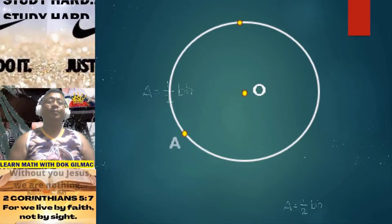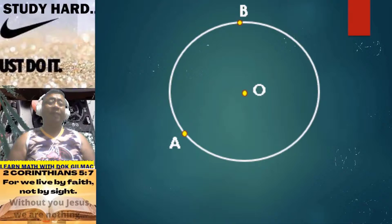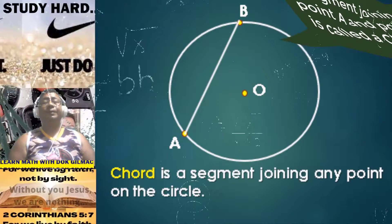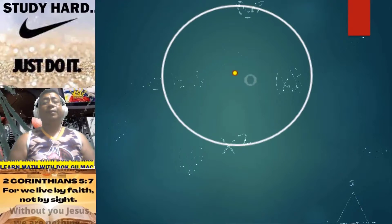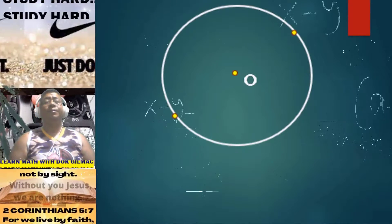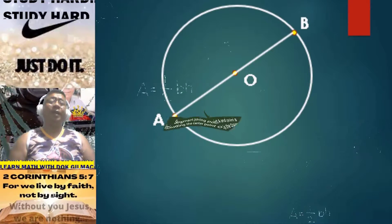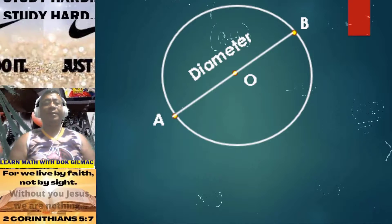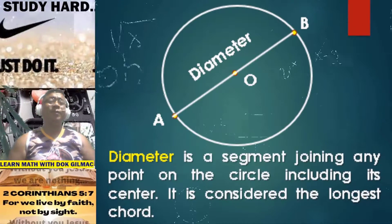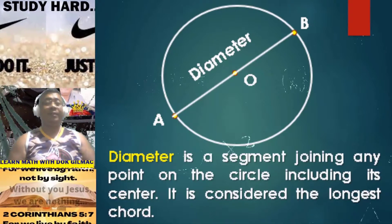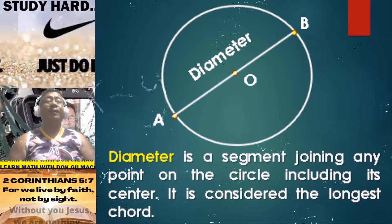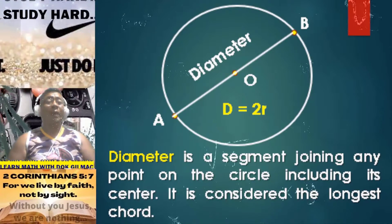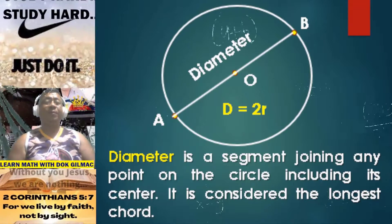Consider circle O. The segment joining point A and point B is what we call a chord. Now, the segment joining point A and point B including the center, point O, is what we call the diameter. Diameter is a segment joining any two points of the circle including its center. Diameter is considered the longest chord. Diameter is also equal to twice the measure of the radius, or simply two times R.